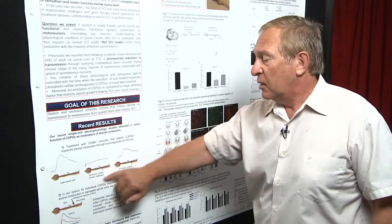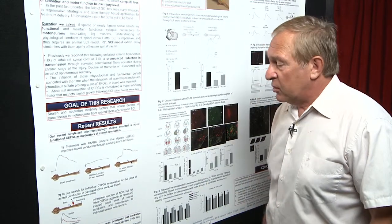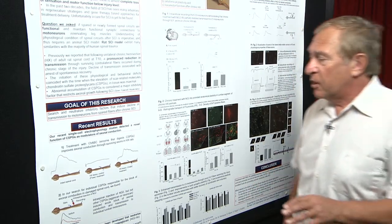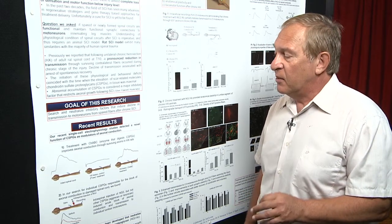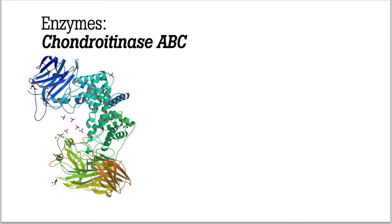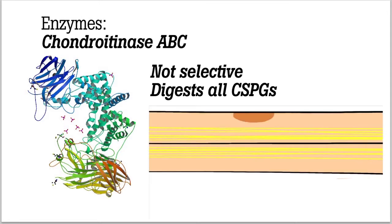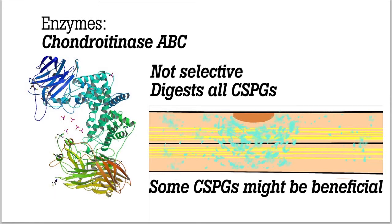The problem with enzyme treatment is that it's not selective—it dissects all CSPGs. Our philosophy was that if CSPGs are coming to the injury, they might be useful to the injury. Not all CSPGs might be bad; maybe some CSPGs could be useful.